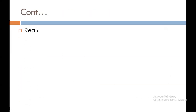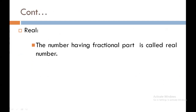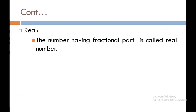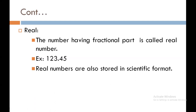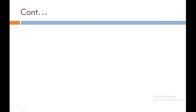Next is real data structure. Real means data with a floating point. The number having a fractional part is called a real number. For example, 123.45. It is also stored in scientific format.